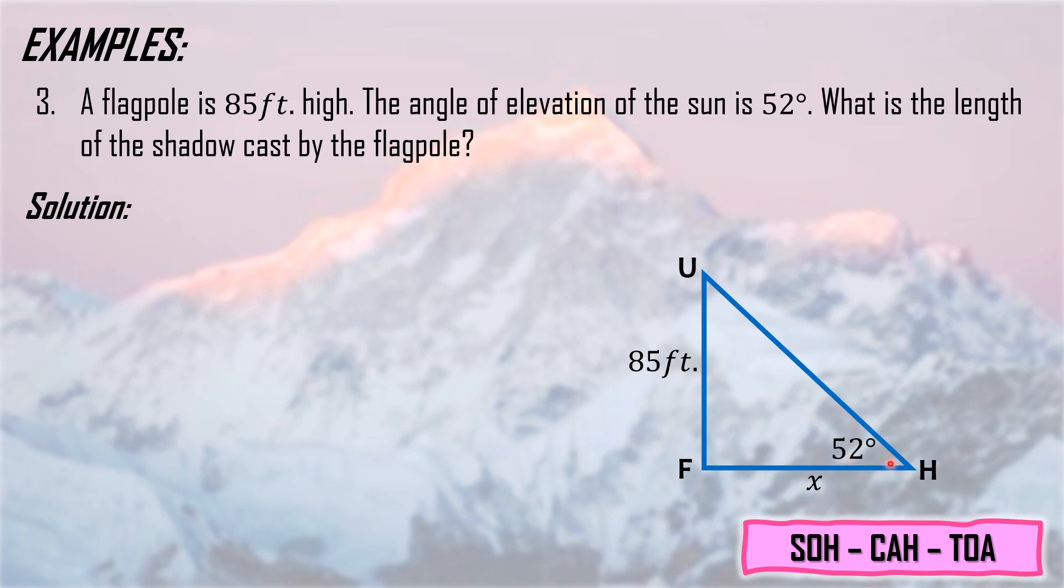Based on this given angle of 52 degrees, the 85 feet is opposite and X is adjacent. So we will use the formula for tangent. Tangent theta equals opposite over adjacent, then substitute the given values: tangent 52 degrees equals 85 feet over X. To get the value of X, we make tangent 52 degrees a fraction by adding denominator 1. Then cross multiply: multiply 1 by 85 and X by tangent 52. This becomes X tangent 52 degrees equals 85 feet.